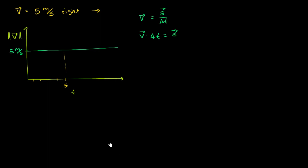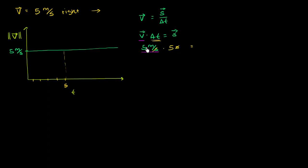So what was the displacement over here? Well, I know what the velocity is — it's 5 meters per second. And we know the change in time here, it is 5 seconds. So you get the seconds cancel out with the seconds. You get 5 times 5 — 25 meters is equal to 25 meters. And that's pretty straightforward.